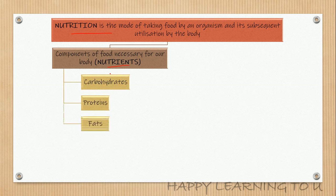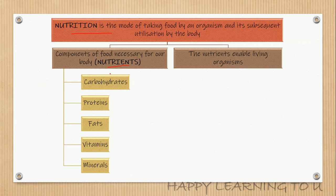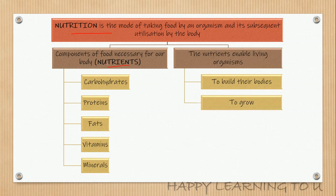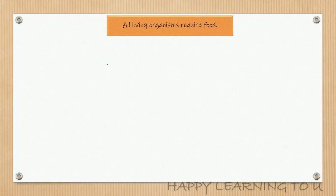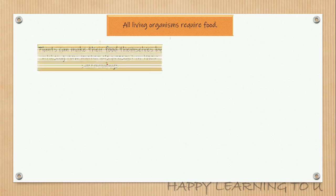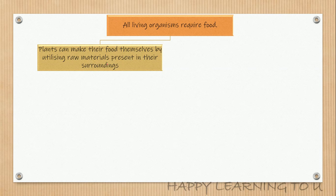Nutrients include carbohydrates, proteins, fats, vitamins, and minerals. We need these nutrients because they enable living organisms to build their bodies, to grow, to repair damaged parts of the body, and to provide energy which is necessary to carry out various life processes.